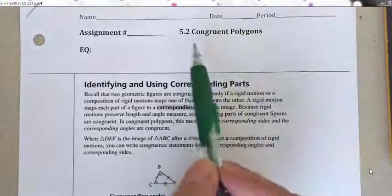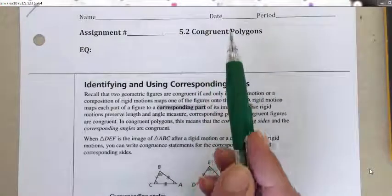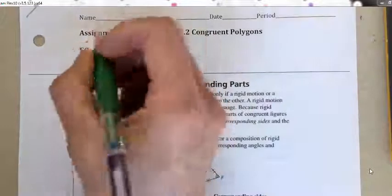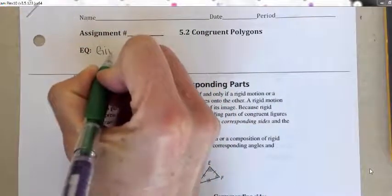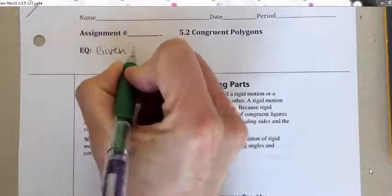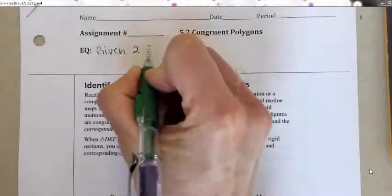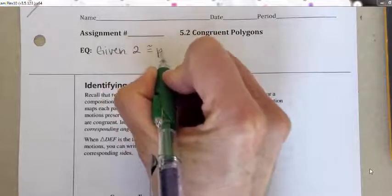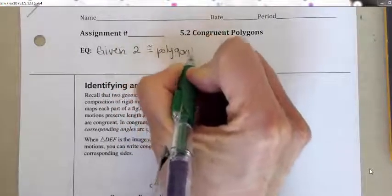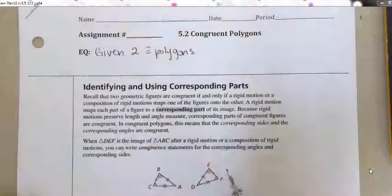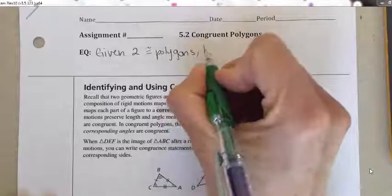Section 5.2 is about congruent polygons. Our essential question is: given two congruent polygons, how can you use rigid motions?